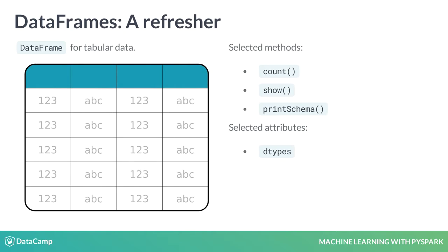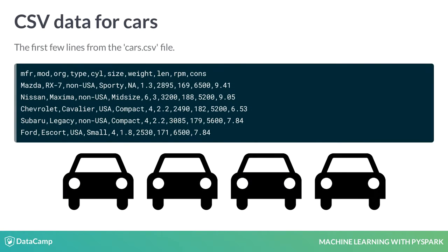CSV is a common format for storing tabular data. For illustration, we'll be using a CSV file with characteristics for a selection of motor vehicles. Each line in a CSV file is a new record, and within each record, fields are separated by a delimiter character, which is normally a comma. The first line is an optional header record which gives column names.